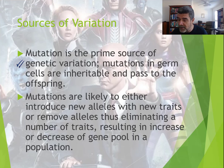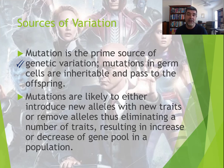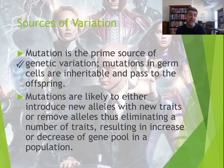Mutations in the germ lines are particularly important because they get passed on from one generation to the next. Any mutations that happen in the formation of sperm or eggs have the potential to be passed on to future generations, appearing in a gene pool where they weren't present before, and potentially changing in frequency. Mutations are likely to either introduce new alleles with new traits, or sometimes remove alleles and eliminate traits.